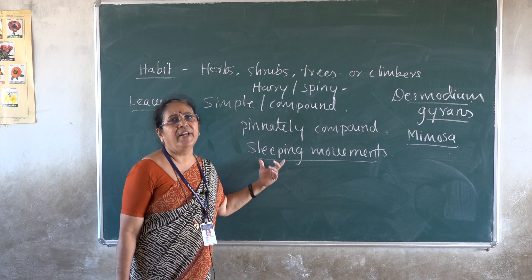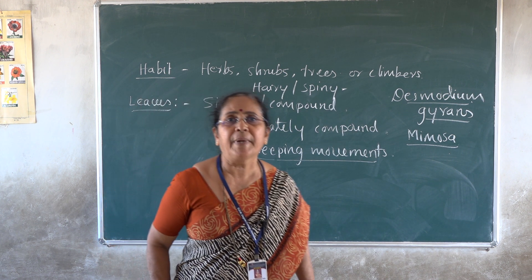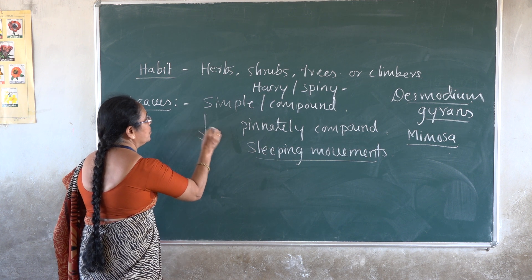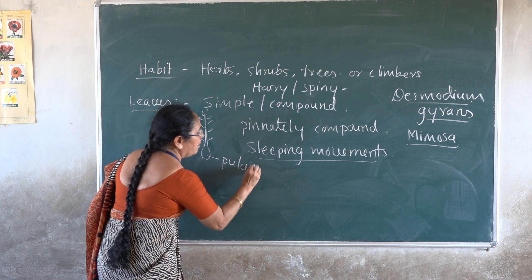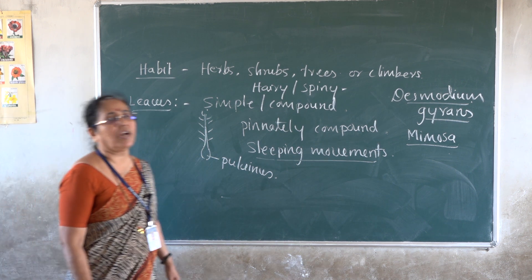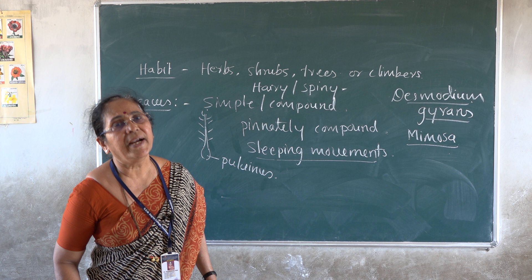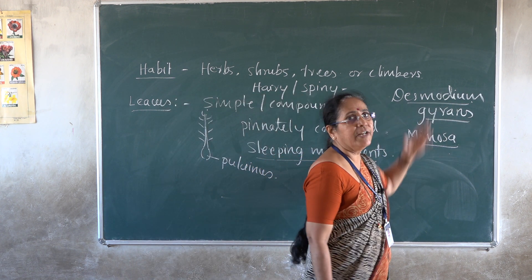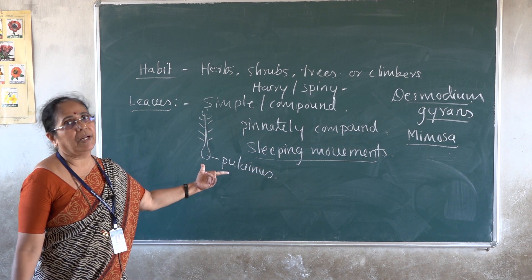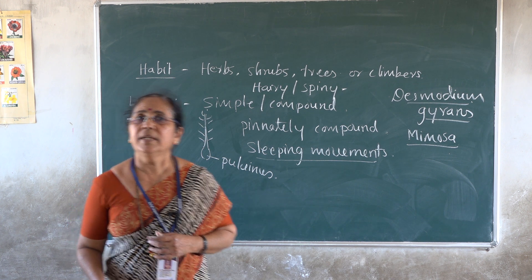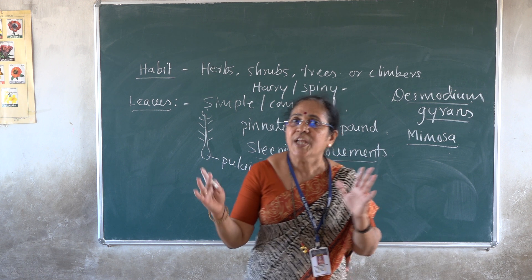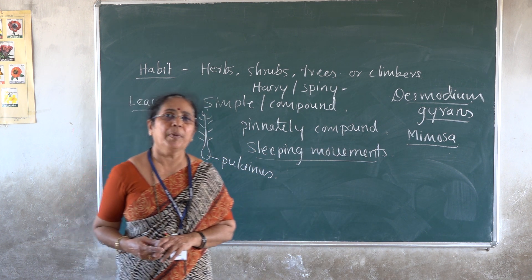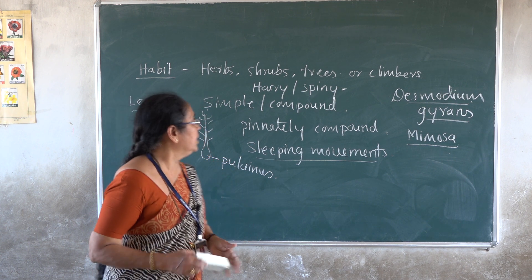Alternate phyllotaxy is of common occurrence; very rarely it is opposite. The leaves are characterized by the presence of a pulvinus leaf base — the leaf base is slightly swollen. Each leaflet is characterized by unicostate reticulate venation. The presence of stipules is also important — stipules may be simple or modified to perform various other functions.